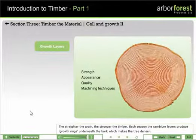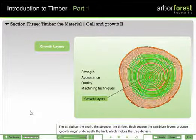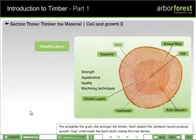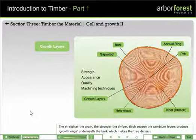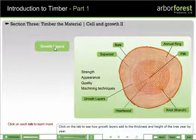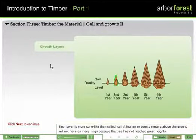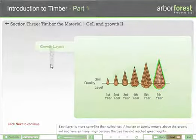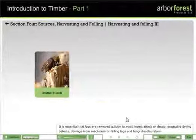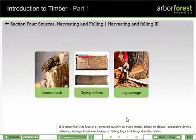Part 1 begins by looking at how trees benefit the environment. Here, for example, we can see how the grain of a tree is created, and how the harvesting of trees is managed in the forest environment.